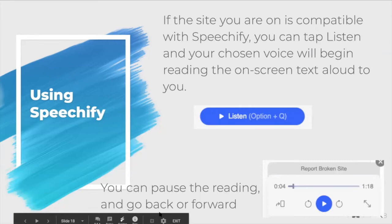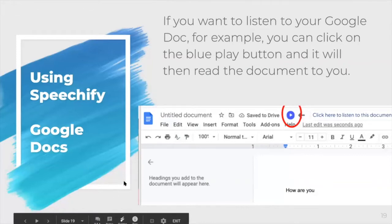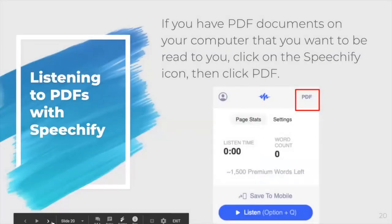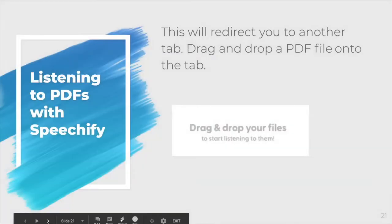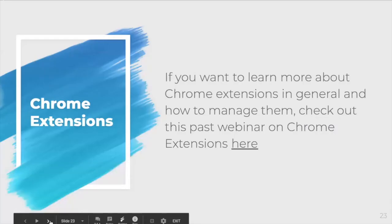You can tap listen and your chosen voice will begin reading the on-screen text aloud to you. You can pause the reading, go back or forward. If you want to listen to your Google Doc, click on the blue play button and it will read the document to you. If you have PDF documents on your computer, click on the Speechify icon then click on PDF, which will redirect you to another tab — drag and drop the PDF file onto the tab and it will be uploaded. If you want to learn more about Chrome extensions, check out the past webinar on Chrome extensions.